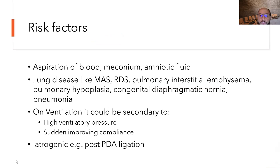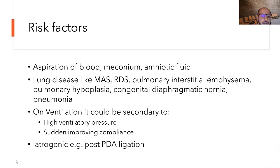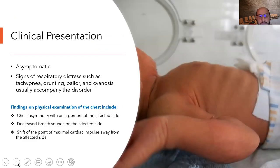Risk factors for pneumothorax include aspiration of blood, meconium, or amniotic fluid; lung diseases such as meconium aspiration syndrome, RDS, pulmonary interstitial emphysema, pulmonary hypoplasia, diaphragmatic hernia, pneumonia; and mechanical ventilation. We discussed all these options as contributing risk factors.